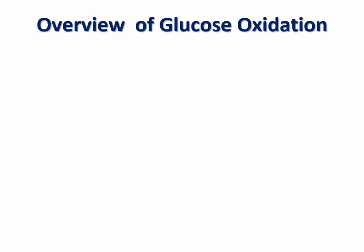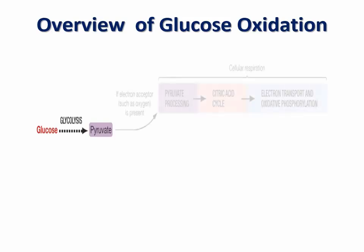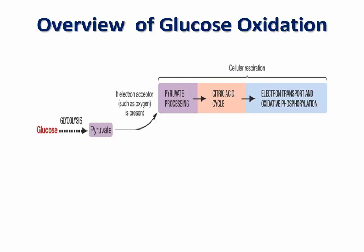Cells oxidize high-potential energy compounds, usually glucose, using three main metabolic pathways. The first pathway is glycolysis, in which glucose is partially oxidized and broken down into a three-carbon molecule known as pyruvate. The second pathway is aerobic respiration, or cellular respiration, which requires the presence of molecular oxygen as the final electron acceptor. Aerobic respiration consists of three metabolic processes: pyruvate oxidation or processing, the citric acid cycle, and the electron transport chain in oxidative phosphorylation.